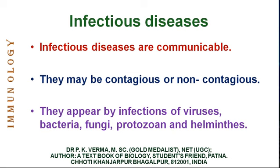Contagious diseases spread when a healthy person comes into closer contact with a diseased person. Corona can also be called a contagious disease because it can attack a person coming within six feet distance. Its droplets can spread in air by sneezing and coughing, and it is said it can also come out through anal gases during farting.